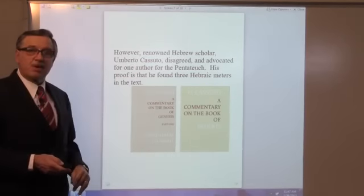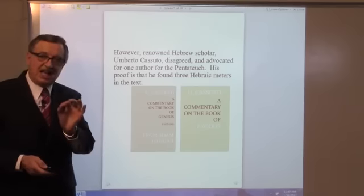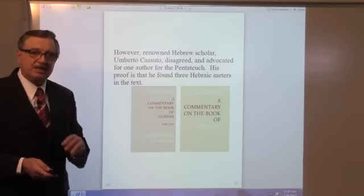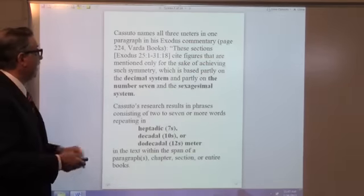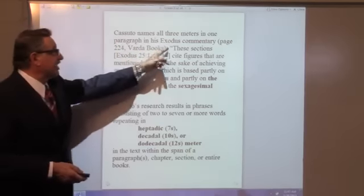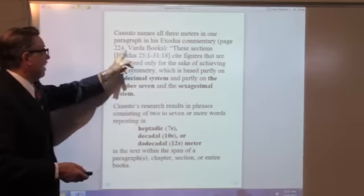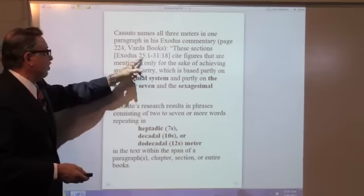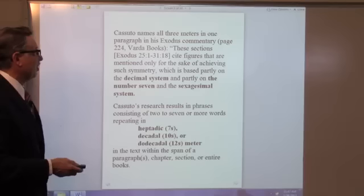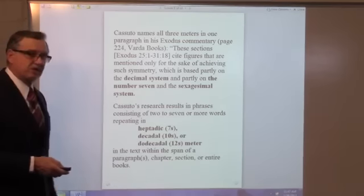renowned Hebrew scholar Berger Kasuda disagreed because he observed three different, unique Hebraic meters in the Pentateuch. Kasuda names all three meters in one paragraph in his Exodus Commentary, page 224, Artz of Books. These sections, Exodus 25:1 through 31:18, cite figures that are mentioned only for the sake of achieving such symmetry, which is based partly on the decimal system and partly on the number seven and the sexagesimal system.